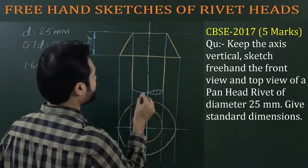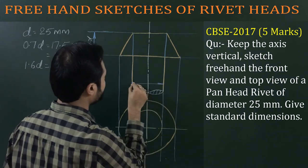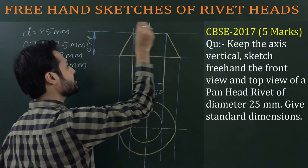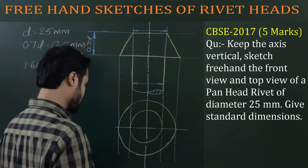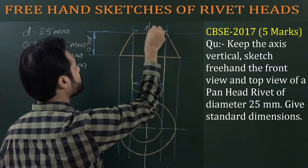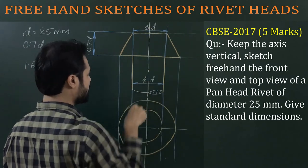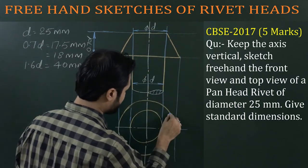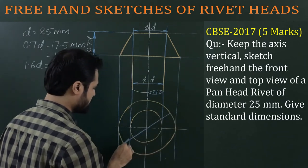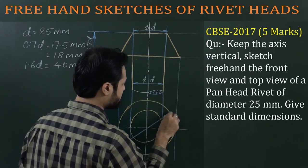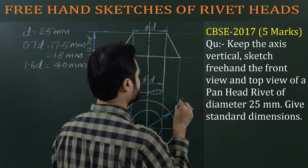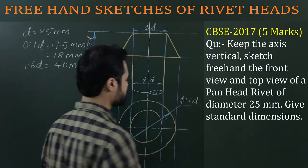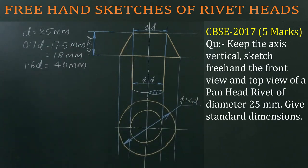Now for dimensioning: the body diameter is D, the upper head diameter is also D, and the lower head diameter is 1.6D. Dimension both circles accordingly — diameter D for the inner circle and diameter 1.6D for the outer circle.